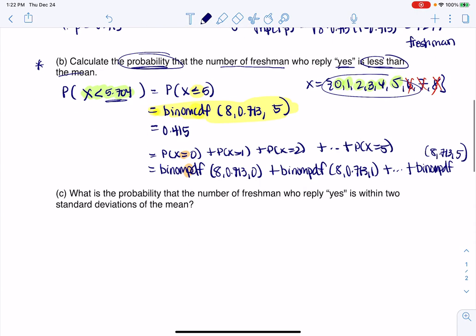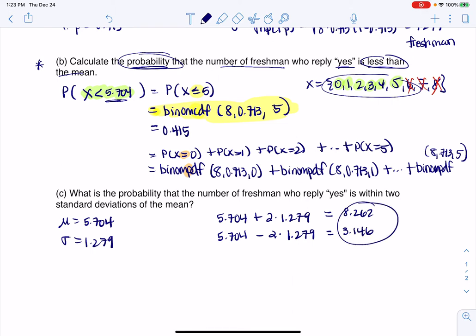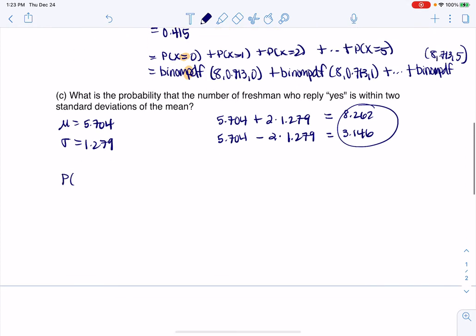All right, so let's keep on moving. This says, what's the probability that the number of freshmen who reply yes is within two standard deviations of the mean? Well, let's just remind ourselves our mean was 5.704 and our standard deviation was 1.279. So let's find these values that are within two standard deviations of the mean. So let me take my mean and let me add two standard deviations to it. And let me take my mean and subtract two standard deviations from it. And when I do this, I get 8.262. And when I do this one, I get 3.146. And so these are my boundaries. These are the values that are within two standard deviations of the mean.